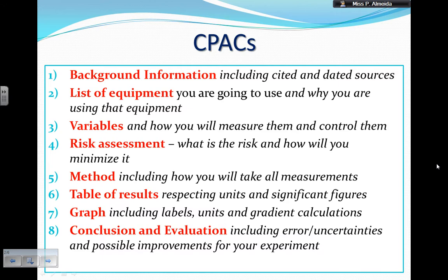For the table of results, be careful of common mistakes: not paying attention to significant figures or not paying attention to units. You need to respect the units and significant figures for all parts of the table, not just one column. For the graph, it needs to have labels, must have units, must have the gradient, and must have calculations about the gradient. You can even include calculations about uncertainty on the graph.